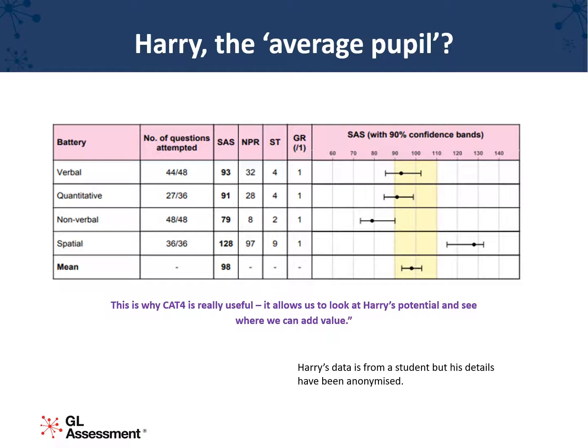Here we can see the individual report for a student called Harry. Harry is a quiet lad, gets on with his work, and is perhaps a little reticent to participate in class discussion. In his CAT4 he scored a mean of 98, firmly within the average band, which would perhaps lead his teacher to rest assured that all is well with Harry. However, the individual battery scores show us that he has a hidden strength.